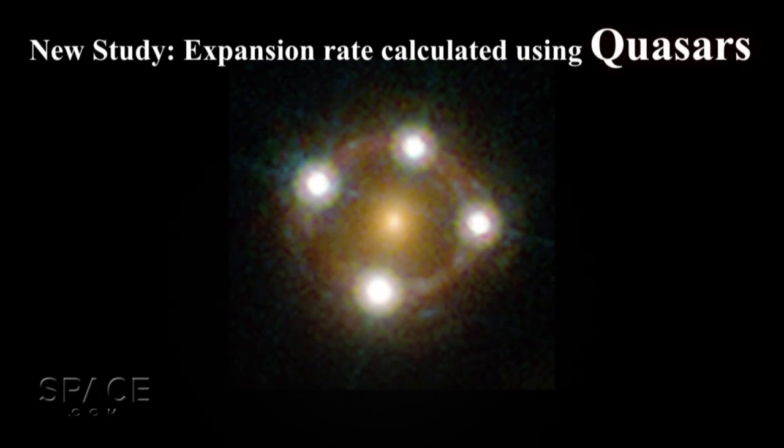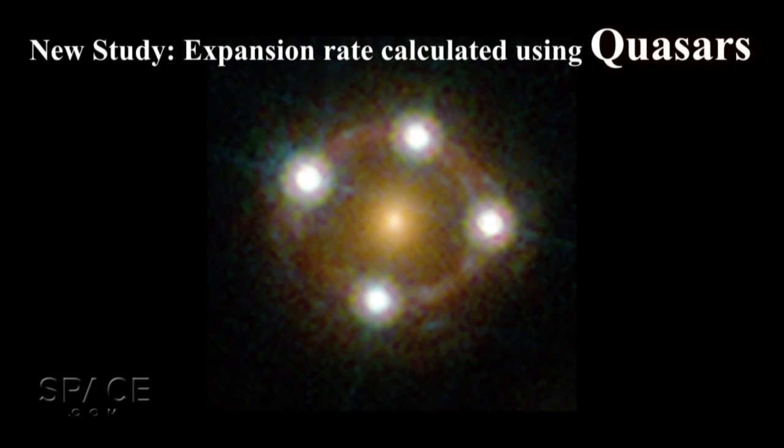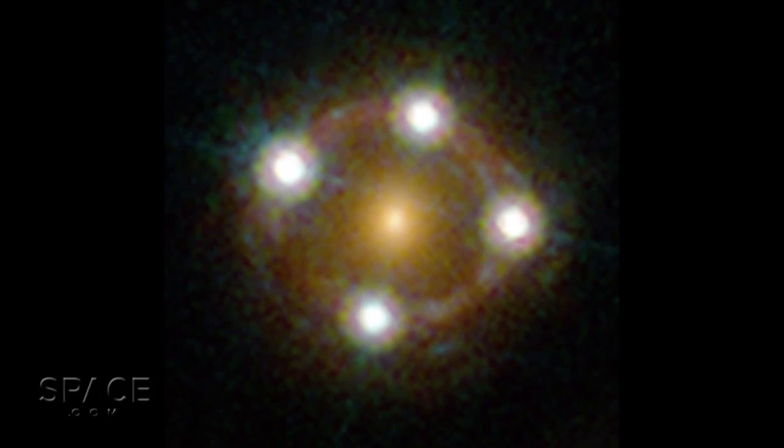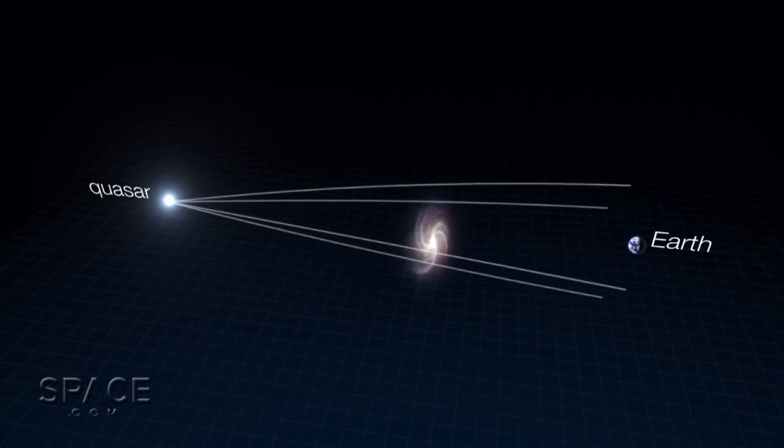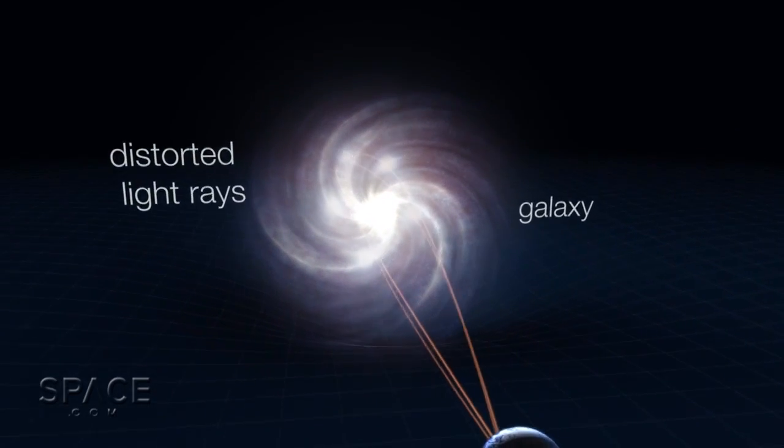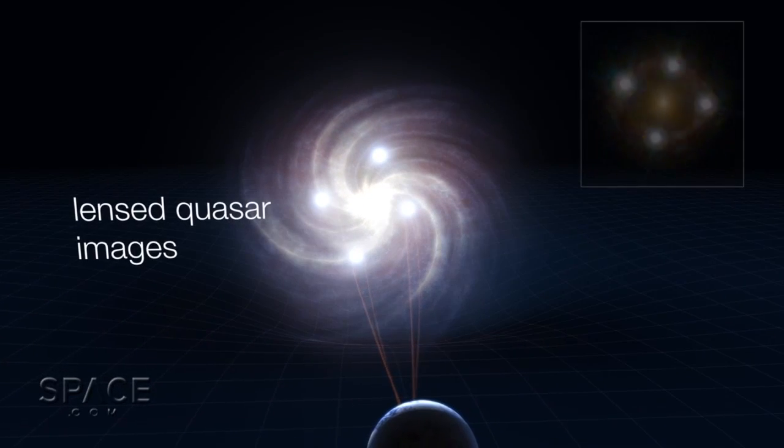In the new study, the authors calculated this rate using distant objects called quasars. Nearby galaxies may warp the light from a quasar, creating what appear to be multiple images of the same object.